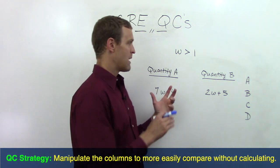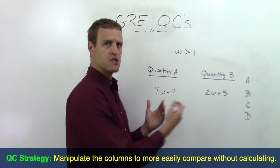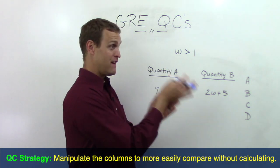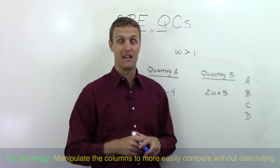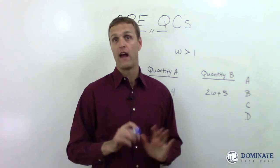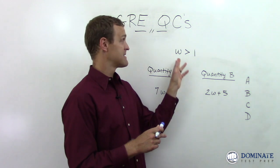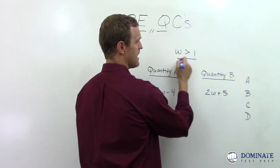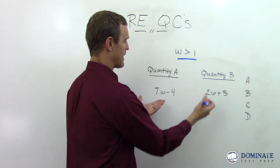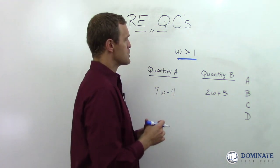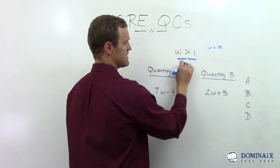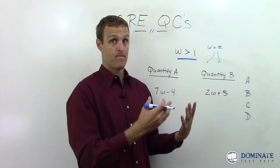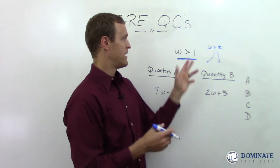The strategy is that we can manipulate the two columns — the two quantities — to put them in an even easier format so we can very quickly visually compare them without having to calculate anything. One approach I teach my students is that when you see variables, a good strategy is to just start making up numbers for those variables. All we're told in the question stem is that W is greater than 1. We're trying to evaluate: is 7W minus 4 or 2W plus 5 greater? So we can say, what if W equals 2? We can plug that in and see which quantity is bigger — or we might find a conflicting outcome depending on what number we pick for W.